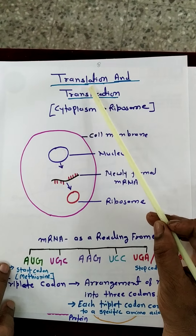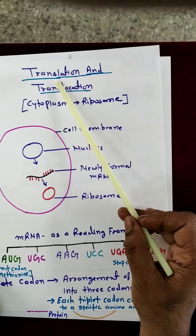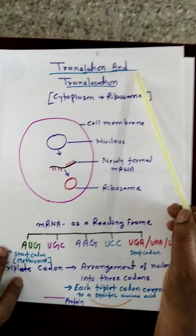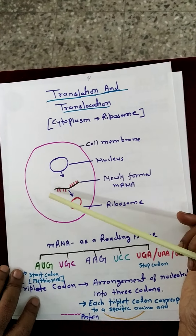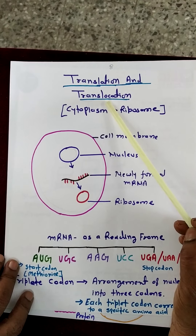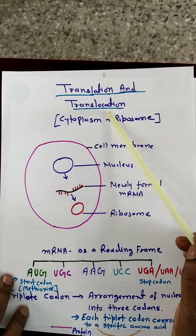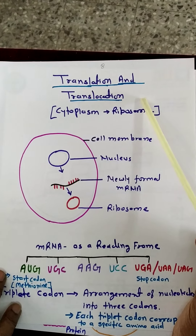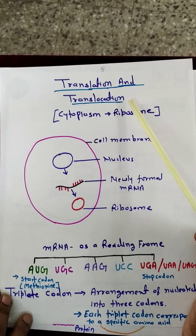Translation means converting a coded message into an understandable language. Translocation means changing of place — 'loco' means place and 'trans' means change. We will see what is translation and what is translocation. This process occurs in the cytoplasm inside the ribosome.